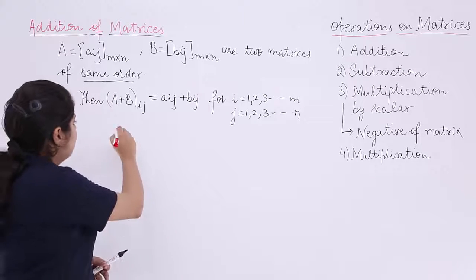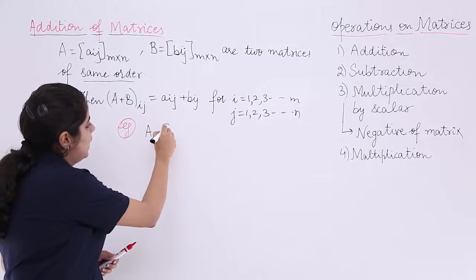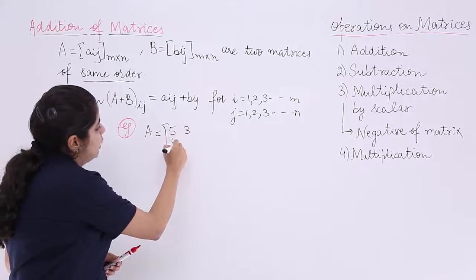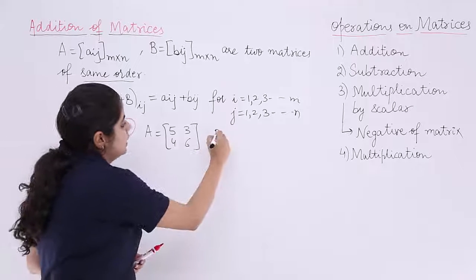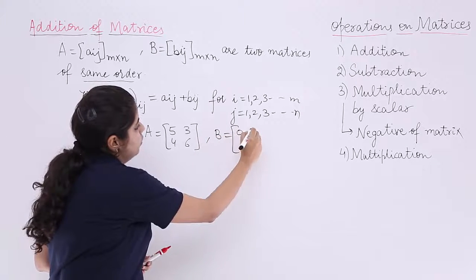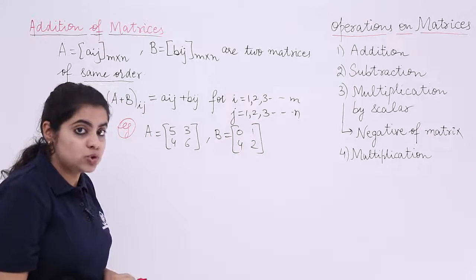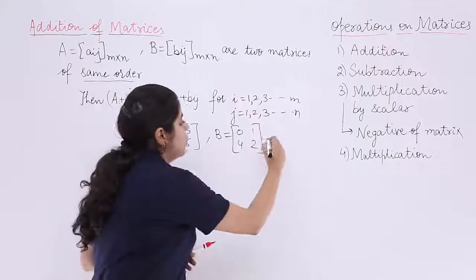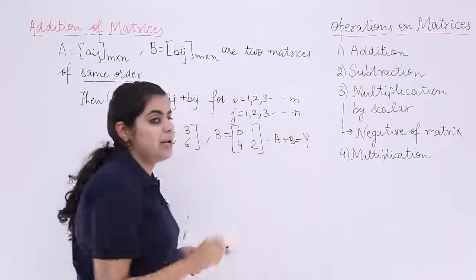So I am taking example number 1 wherein I have been given one matrix A as [5, 3; 4, 6]. The other matrix is B as [0, 1; 4, 2] and you are supposed to find out the resultant matrix A plus B.